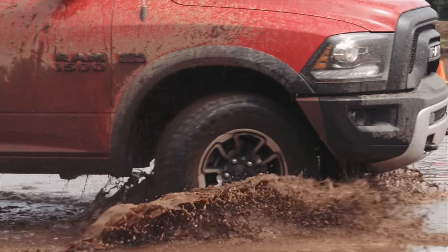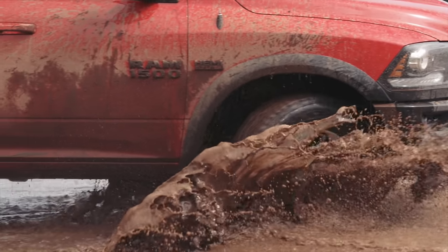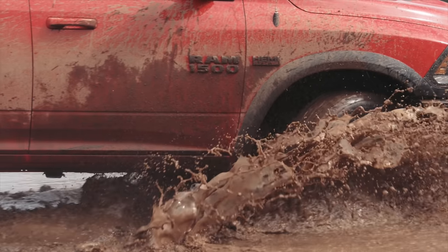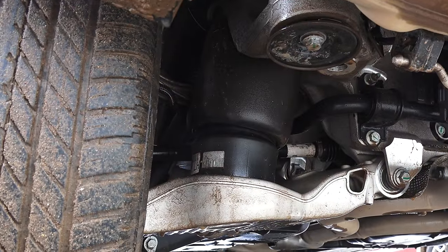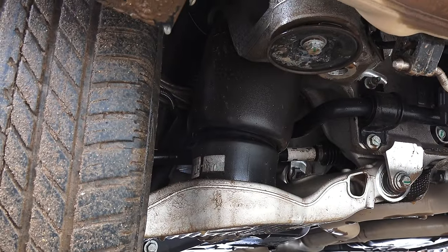The benefit of a system like the rolling lobe, it's a bit more tunable. But the convoluted gives you a bit better packaging. The distance between the axle and the frame is reduced versus using a rolling lobe system.